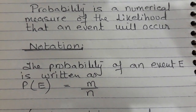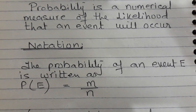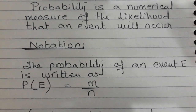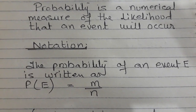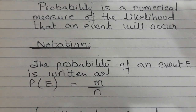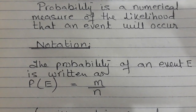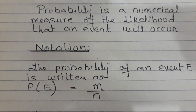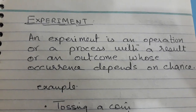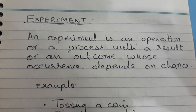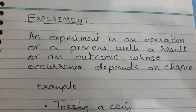Probability has a notation, just like plus or minus signs. It is written as P(E) = M over N. Probability is expressed in either fraction form, percentage form, or decimal form. I'll explain what M and N represent shortly.